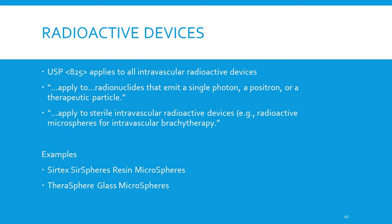Radioactive devices: USP 825 applies to all intravascular radioactive devices — applies to radionuclides that emit a single photon, a positron, or therapeutic particles. This includes sterile intravascular radioactive devices such as radioactive microspheres for intravascular brachytherapy. Examples include SIRTeX, SIRSpheres, Resin Microspheres, or TheraSpheres glass microspheres.